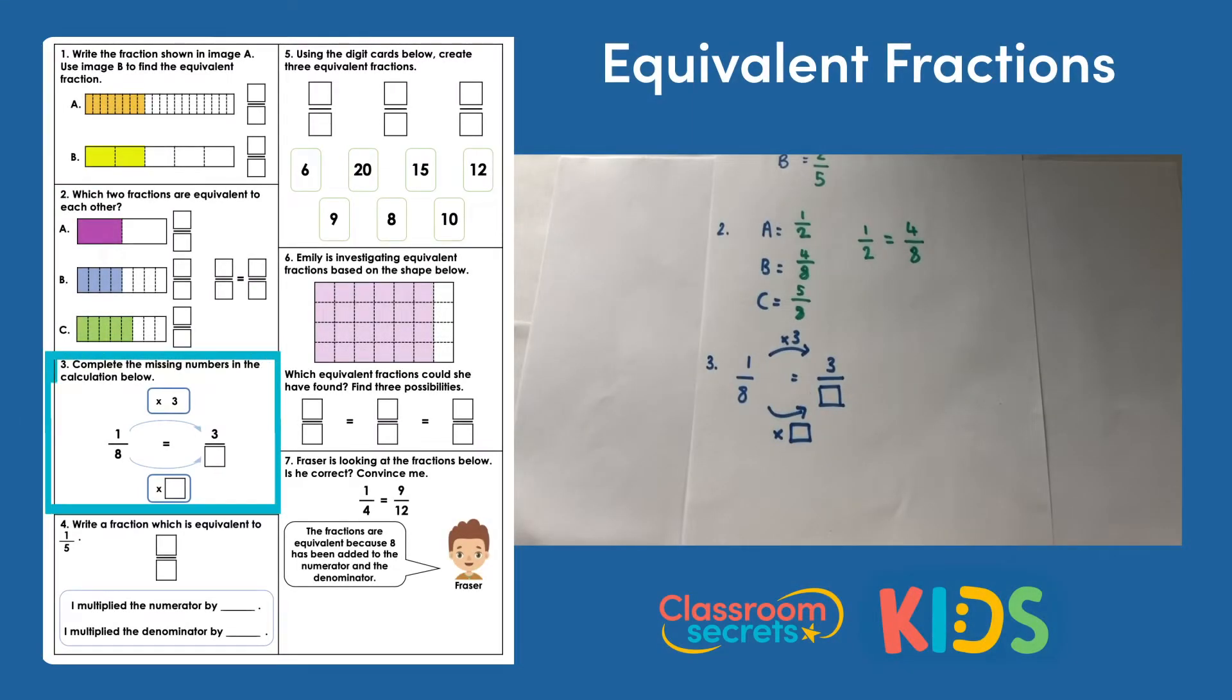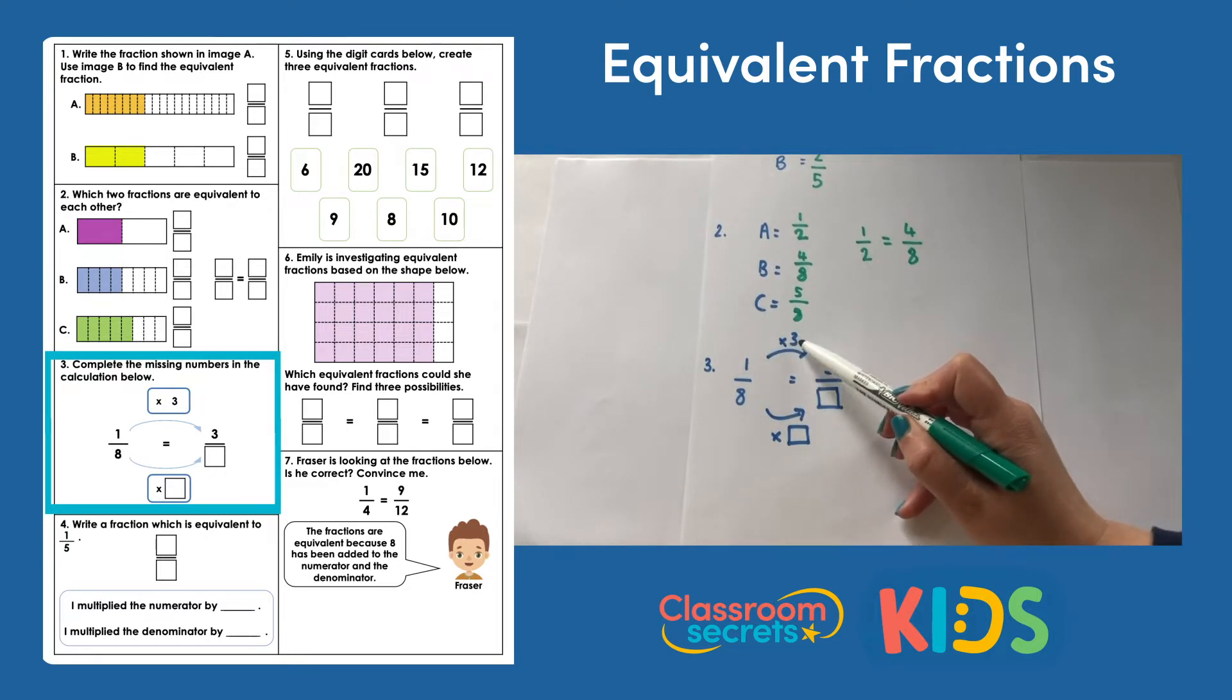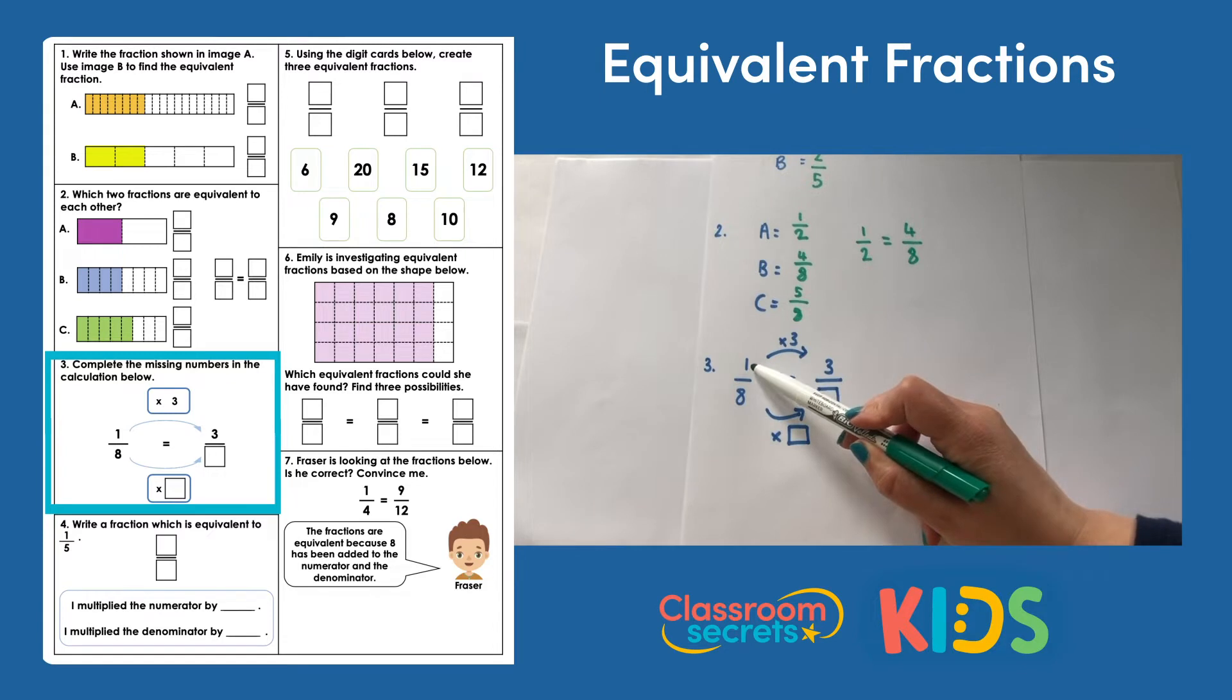Question 3. We're looking at applying the rule of multiplying the numerator and the denominator by the same number to find an equivalent. We have our eighth to start off with, and our numerator here is being multiplied by 3 to give us 3. We need to find out what we do to the denominator to find the missing number here. If we're going to multiply the numerator by 3, we need to multiply the denominator by the same number. So I'm going to multiply that by 3. 3 times 8 is 24, so our equivalent fraction is 3 24ths.